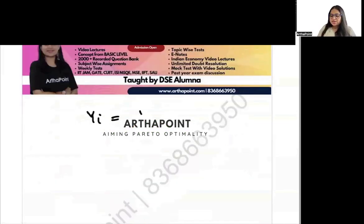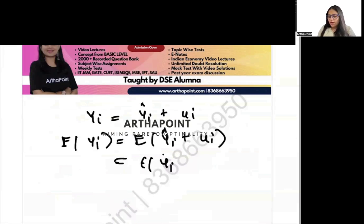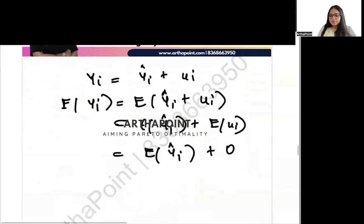You could have simply written yi is equal to yi hat plus ui and E of yi is equal to E of yi hat plus ui, E of yi hat plus E of ui, E of yi hat plus 0. This also proves the same thing in a very short way that the expected value of yi is equal to expected value of yi hat.